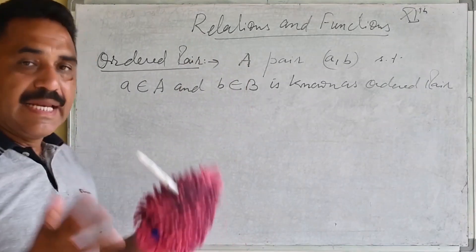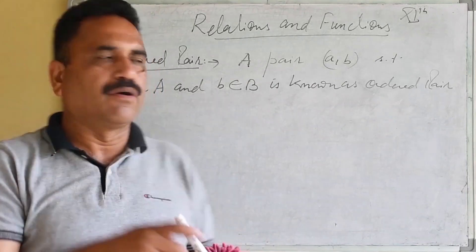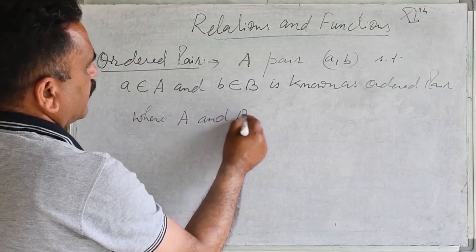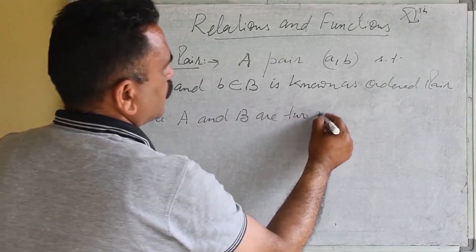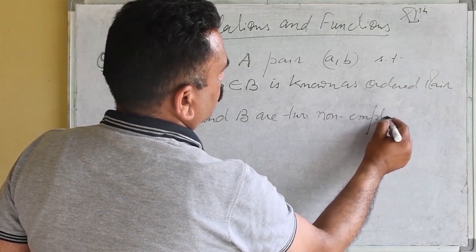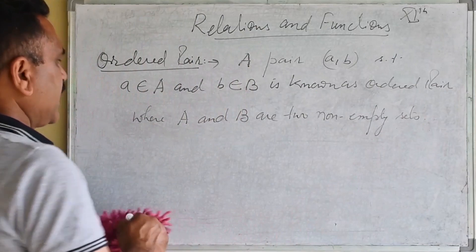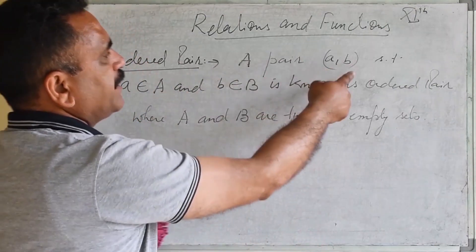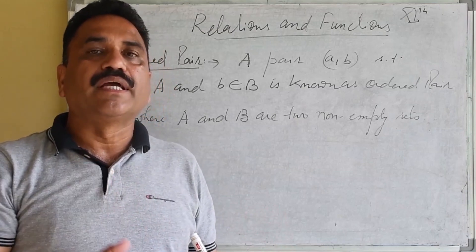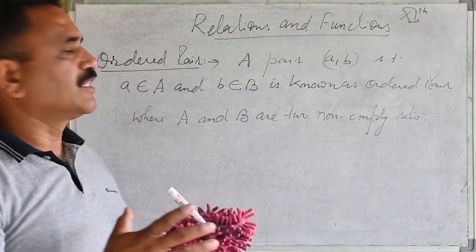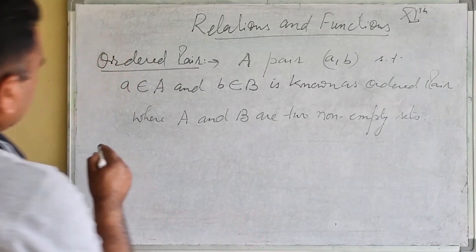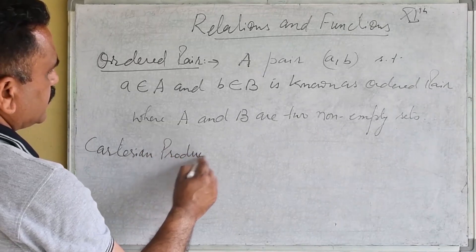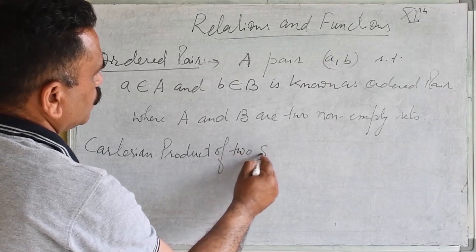An ordered pair is when the elements are written in a specific order. That is where A and B are two non-empty sets. If we write element A belonging to set A, then B belonging to set B, this type of pair is known as an ordered pair — when elements are written in a specific order. Next is the Cartesian product of two sets.